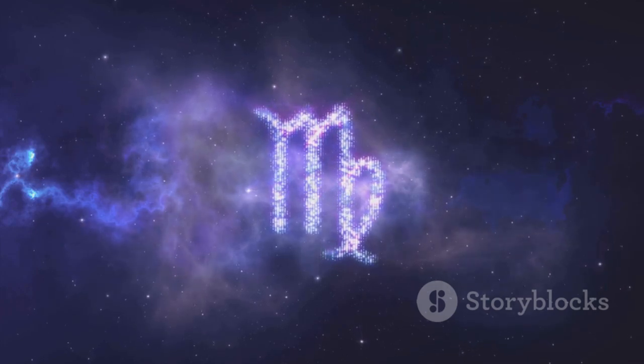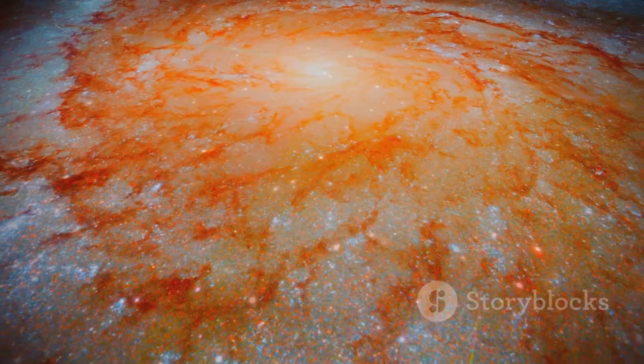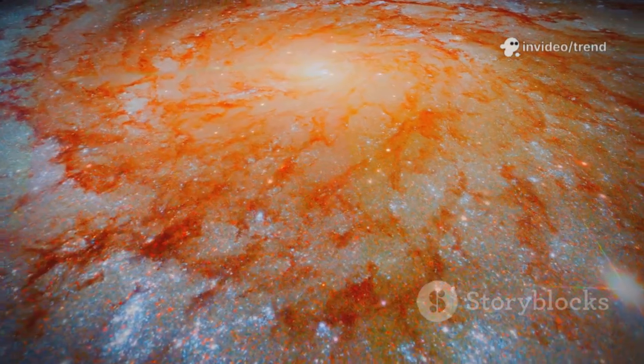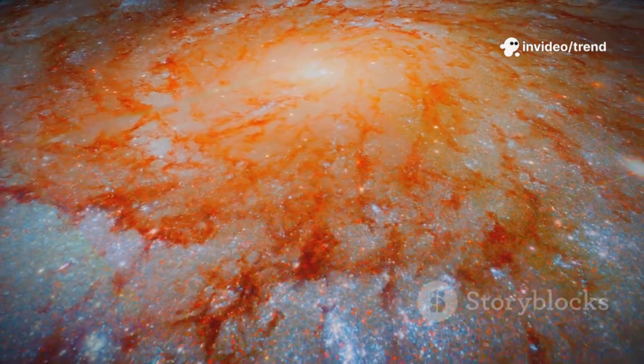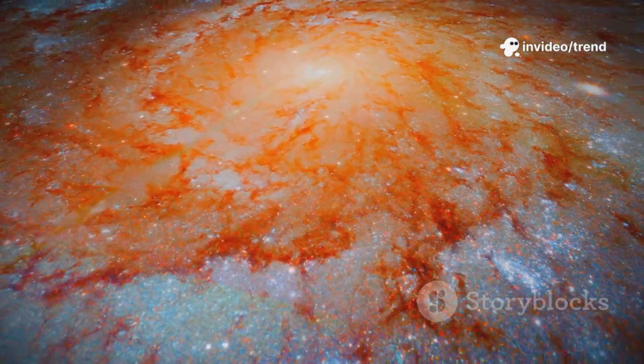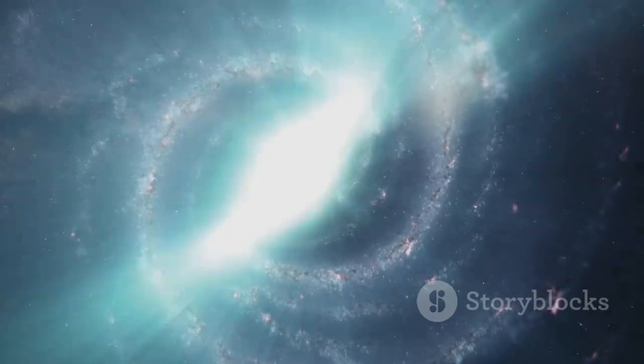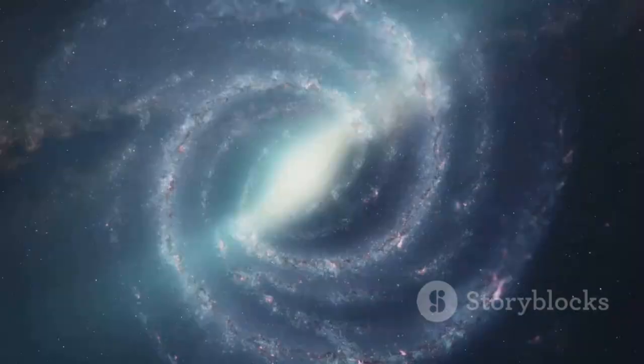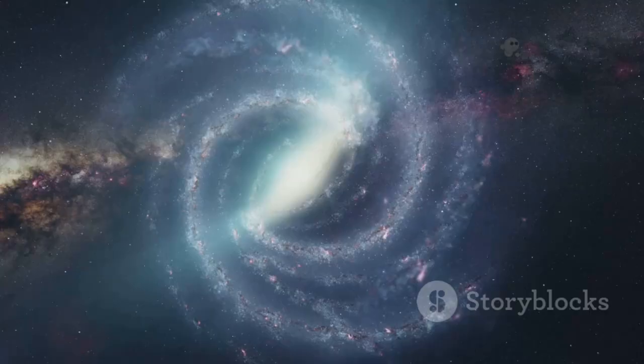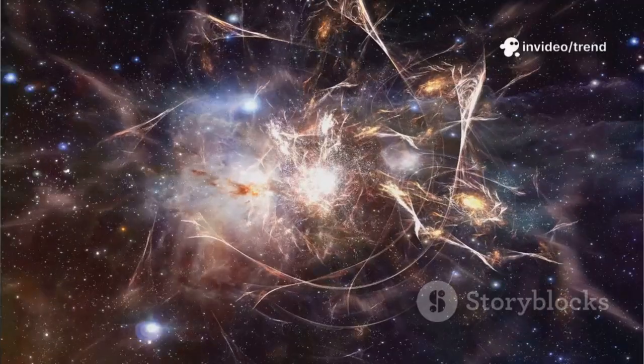These galaxies are some of the most distant ever seen, each a self-contained island of stars, gas, and dust. Tiny beacons shining from the dawn of time. They're the seeds of today's grand spirals and ellipticals, the ancestors of the galaxies we see in the night sky now.